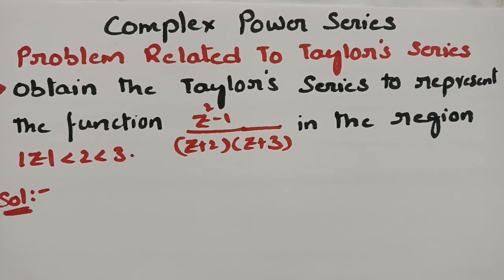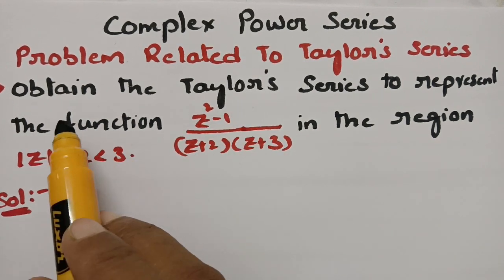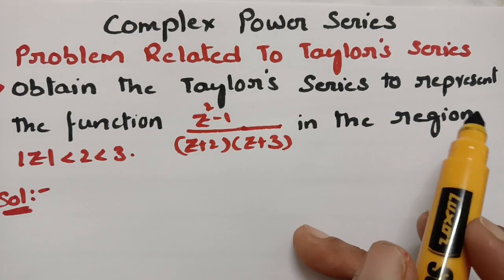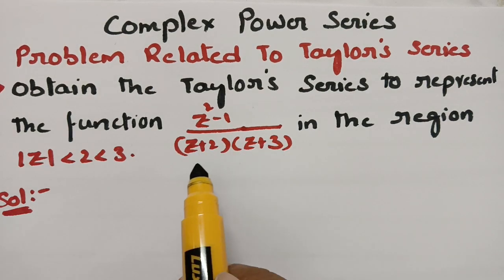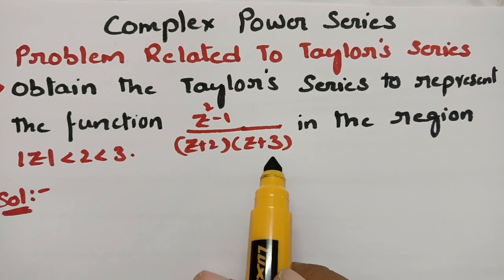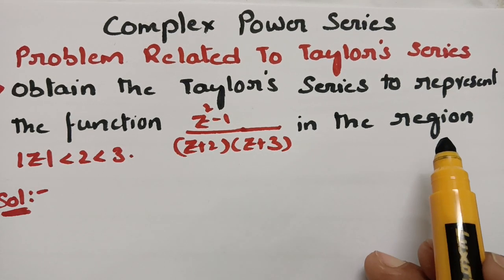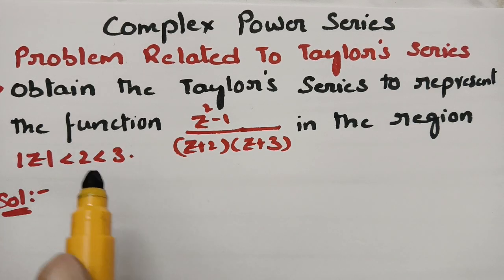Today's video is on the problem related to the Taylor series, a topic from complex power series. We have to obtain the Taylor series to represent the function (z²-1)/((z+2)(z+3)) in the region |z| < 2 < 3.